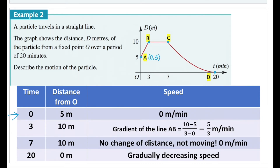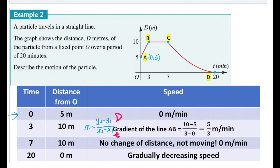Distance over time is equal to speed — that's the whole idea behind the gradient here. The gradient equals the difference in y-values over the difference in x-values. Since y represents distance and x represents time, the gradient of line ab is the speed of the particle. Point a is (0, 5) and point b is (3, 10). Using the gradient formula: (10 − 5) / (3 − 0) = 5/3 meters per minute. This is the speed during interval ab.